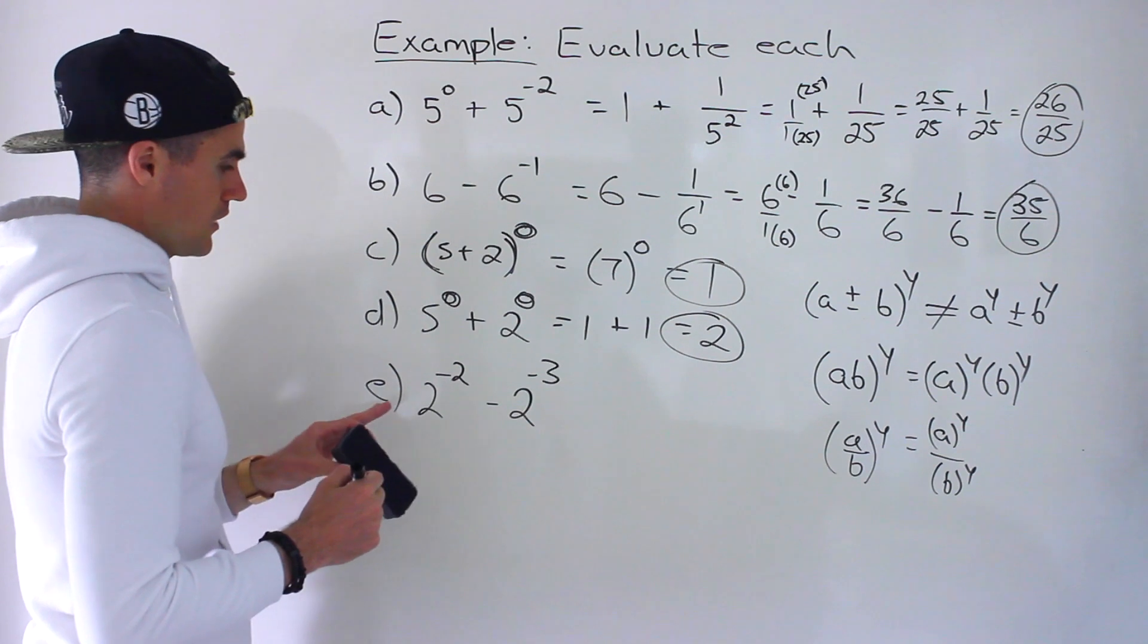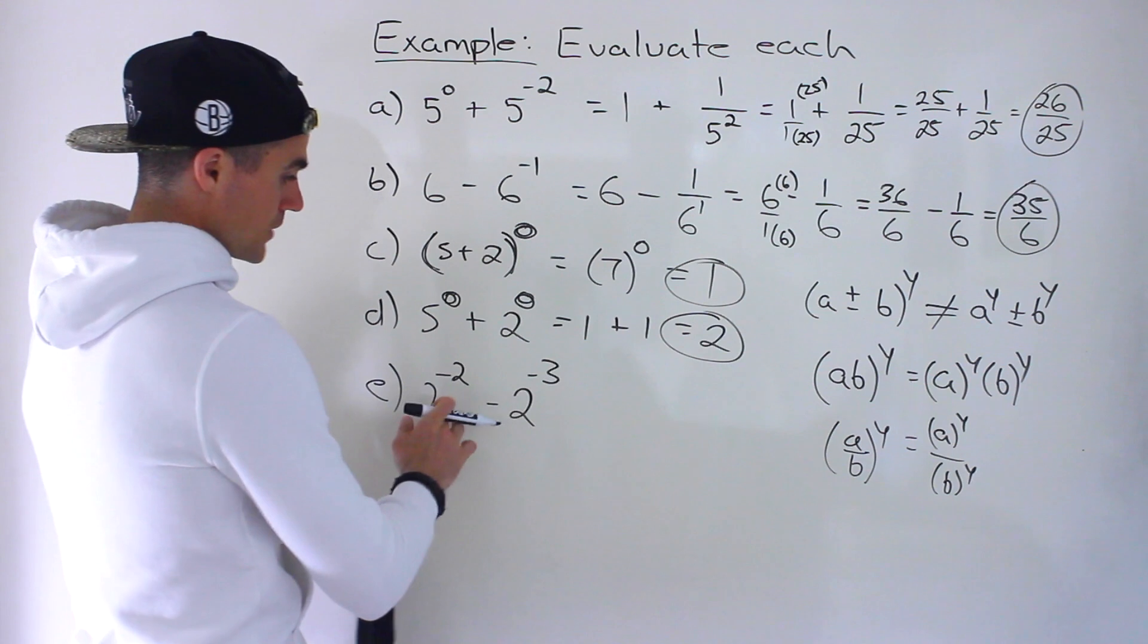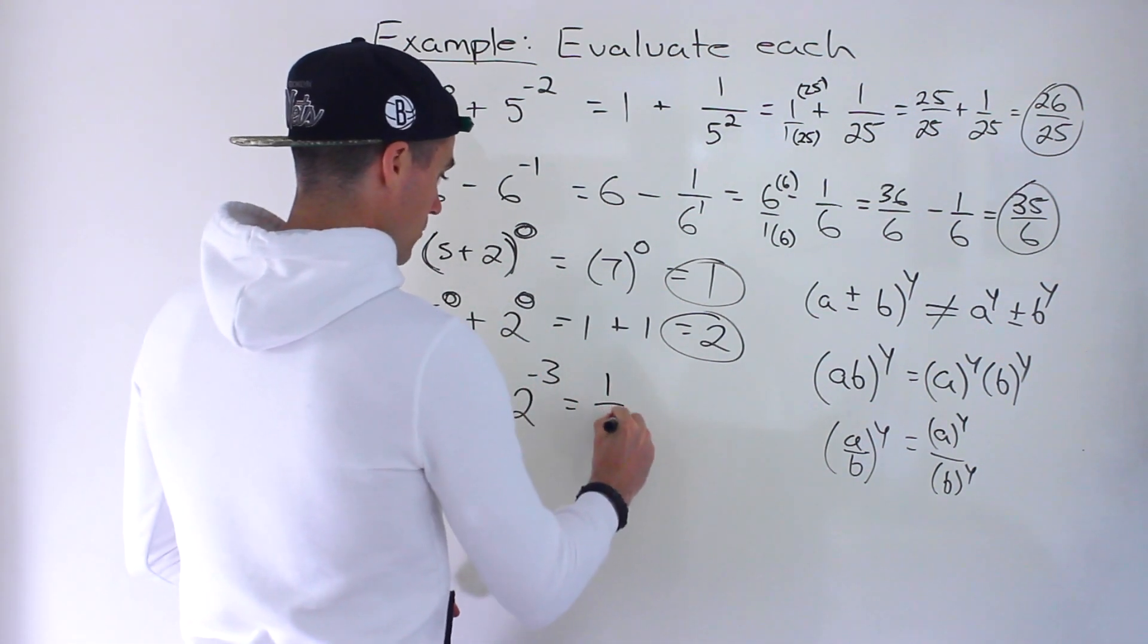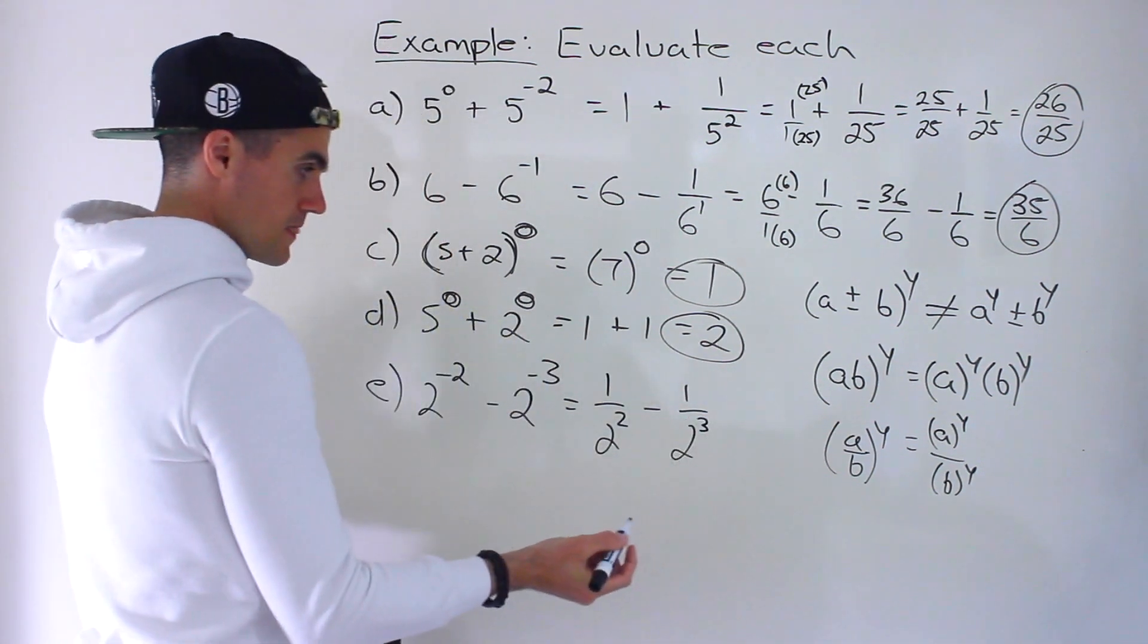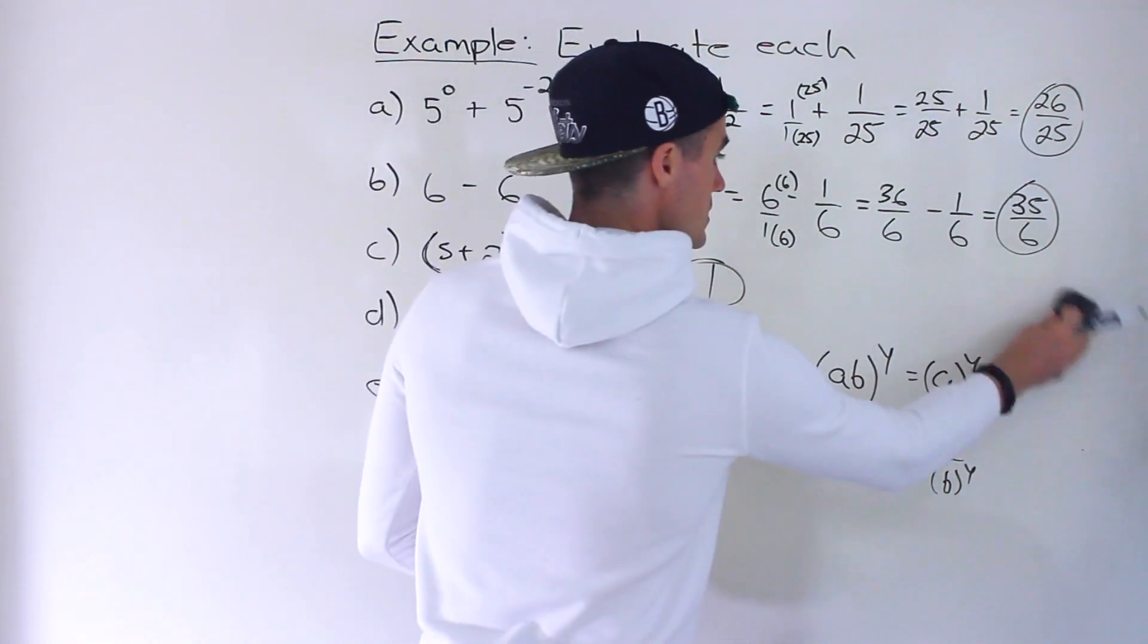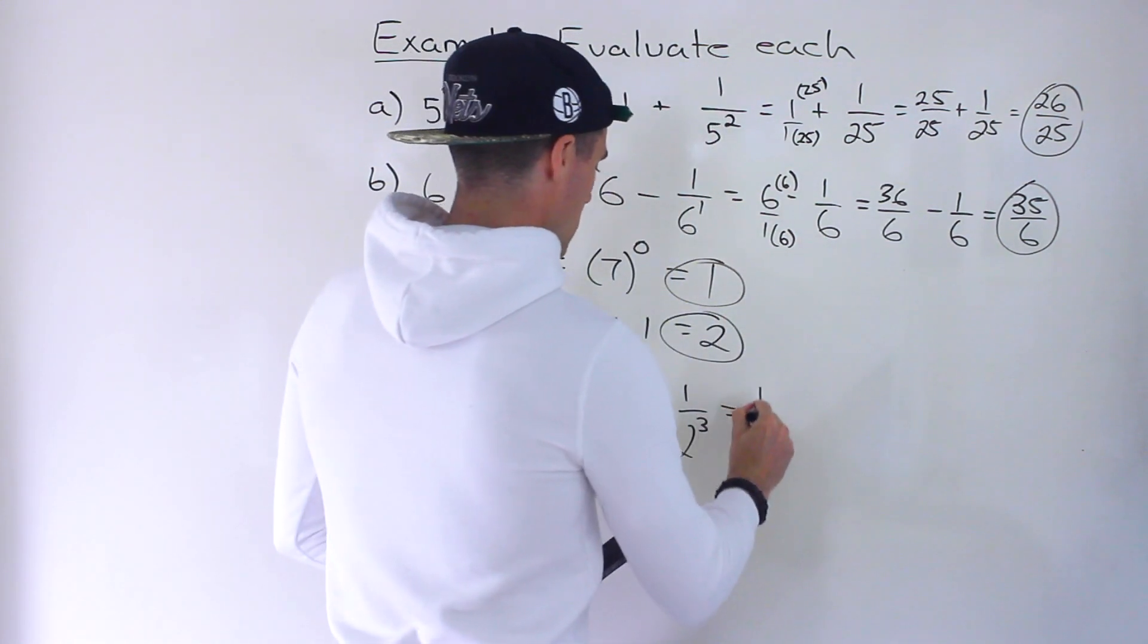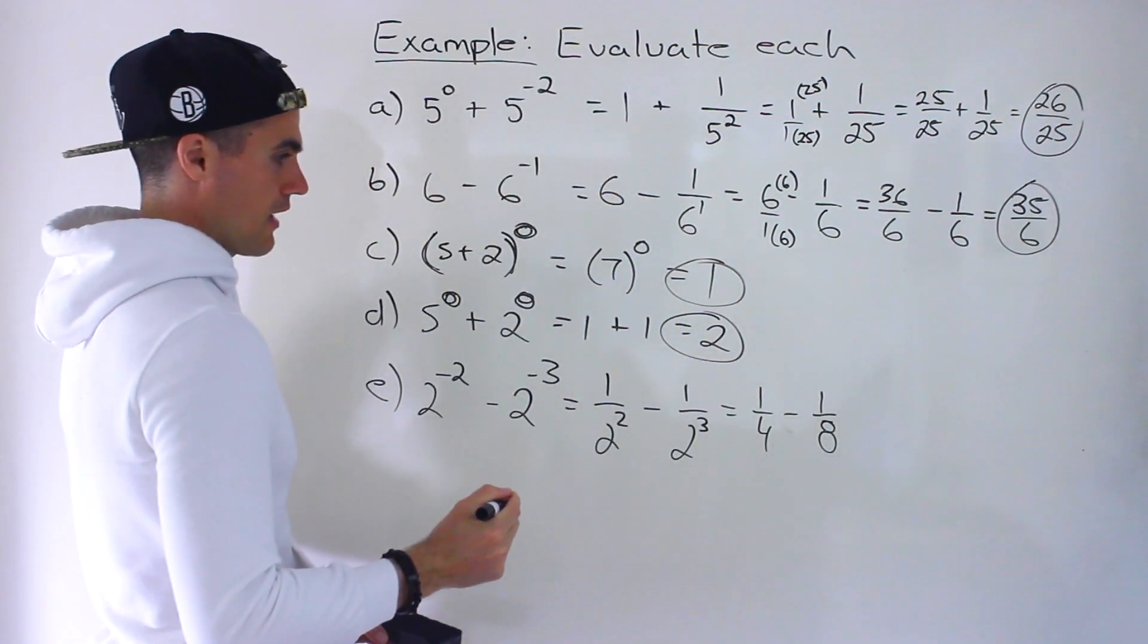Okay, and then moving on finally to part E. So we got 2 to the power of negative 2 minus 2 to the power of negative 3. So we'd rewrite this as 1 over 2 to the power of positive 2 minus 1 over 2 to the power of positive 3. So this would end up being 1 over 4 minus 1 over 8.